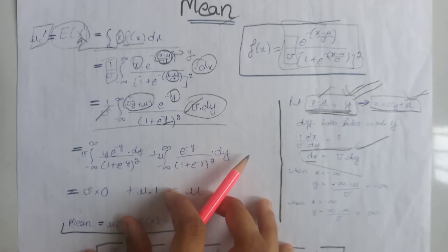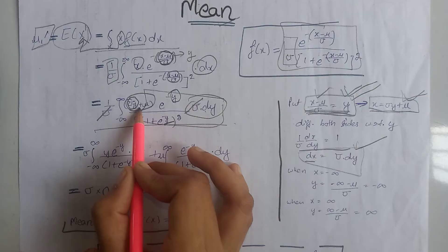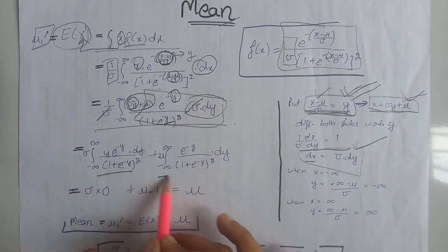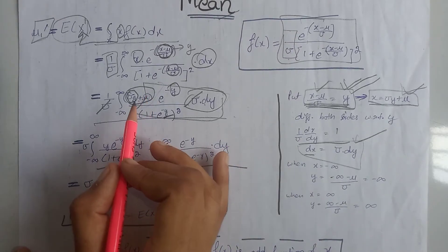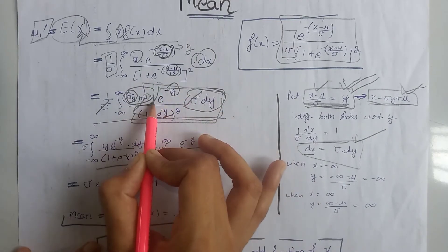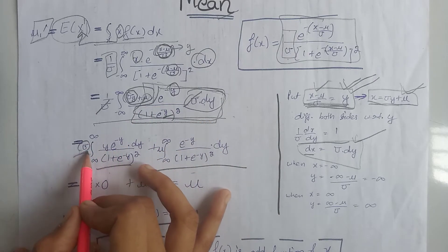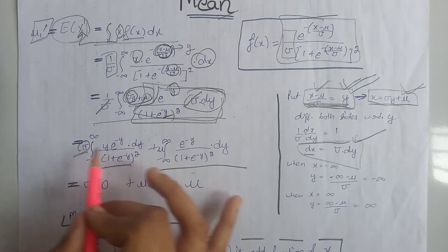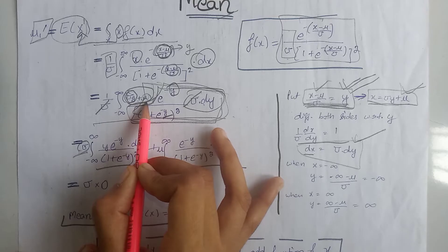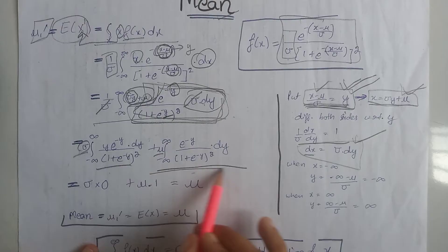Next, we can cancel this sigma with this sigma. Now, we multiply sigma·y with this whole term and mu with this whole term to get two different integrations. Sigma is independent of the y random variable, so it is a constant term and we write it outside the integration. Similarly, mu is independent of y, so we write mu outside the integration as well.